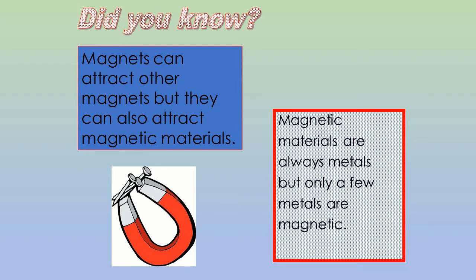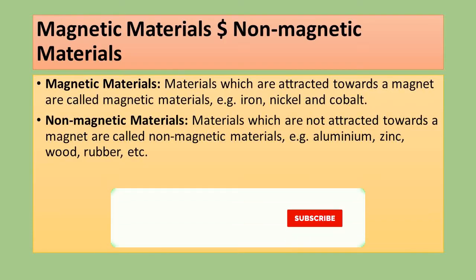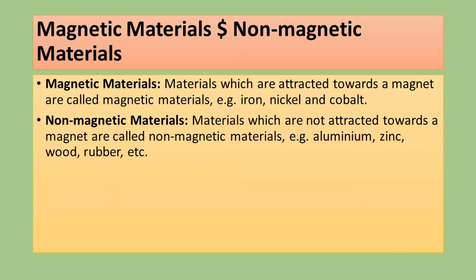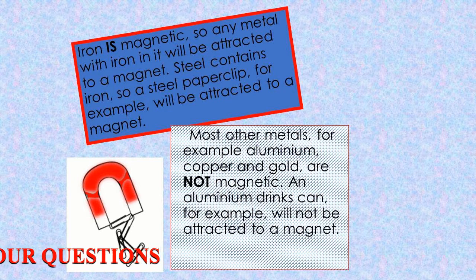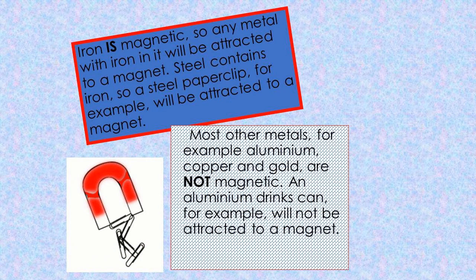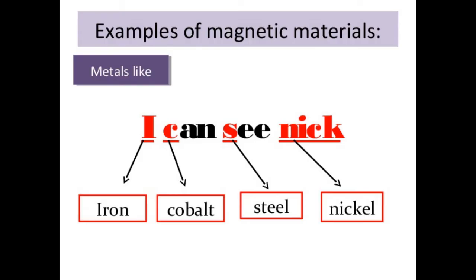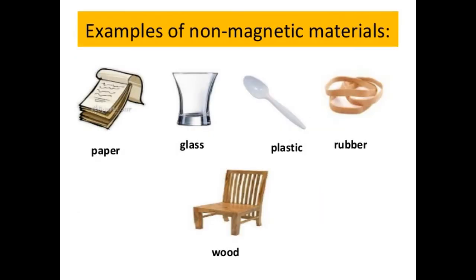What do these magnets attract? They don't attract everything. We can classify all materials on the basis of whether they get attracted by the magnet or not. Materials which are attracted towards a magnet are called magnetic materials — for example, iron, nickel, and cobalt. Materials which do not get attracted by the magnet are called non-magnetic materials — for example, aluminium, zinc, wood, rubber, etc.